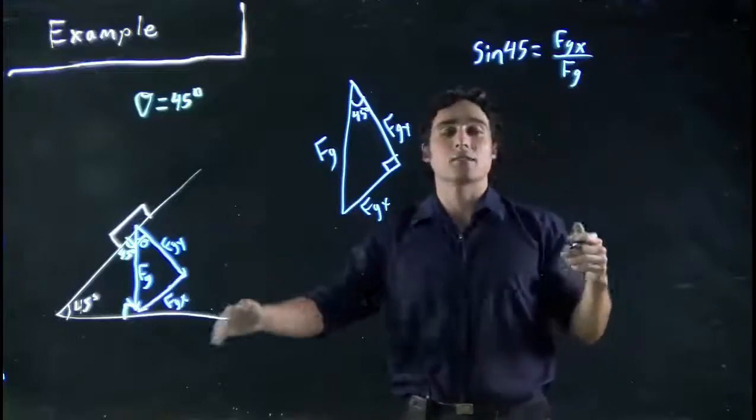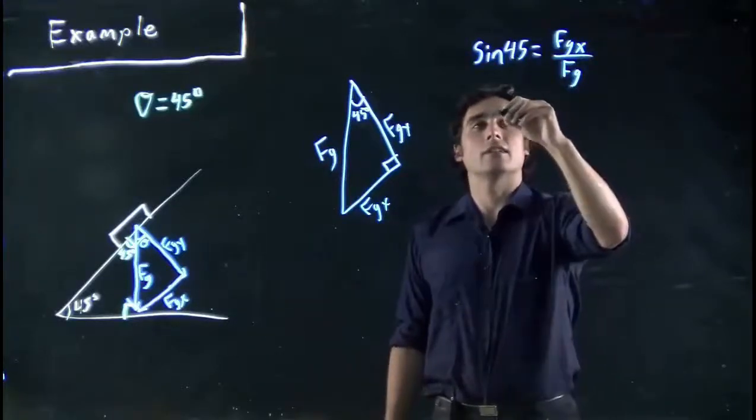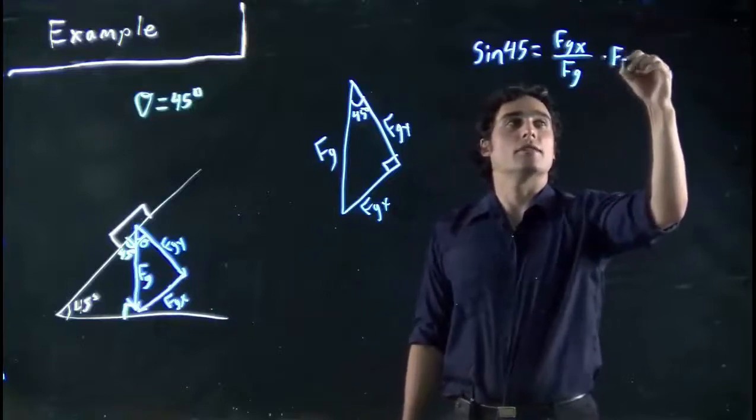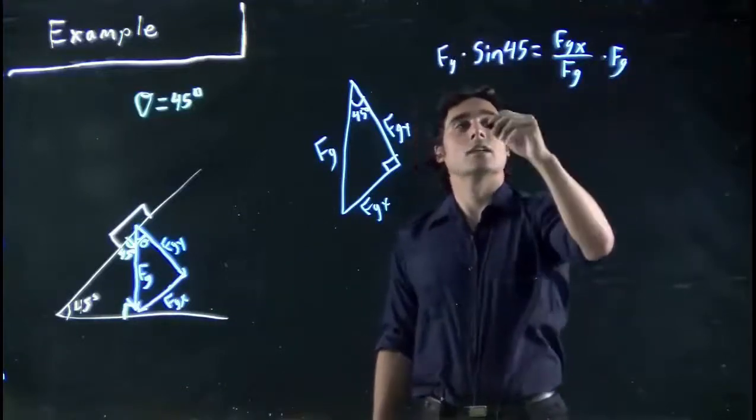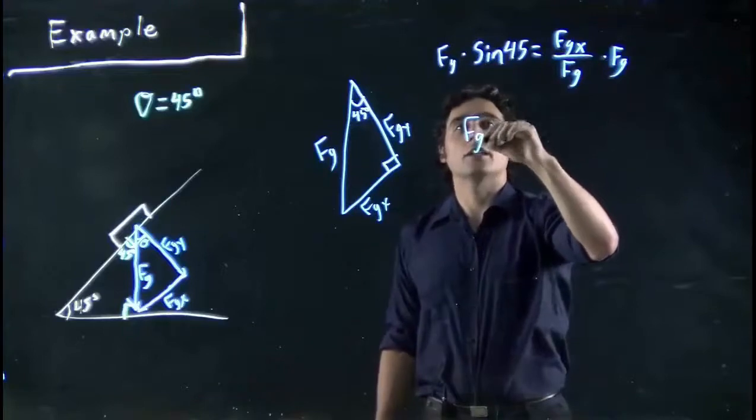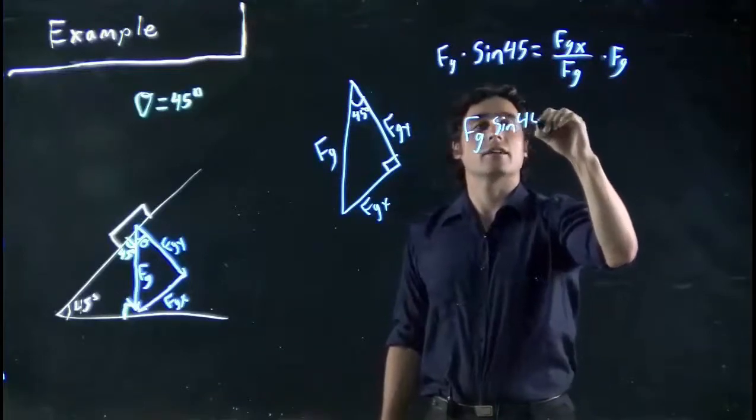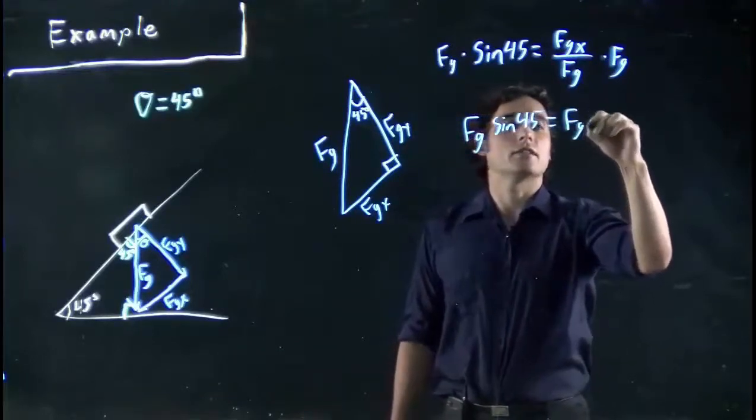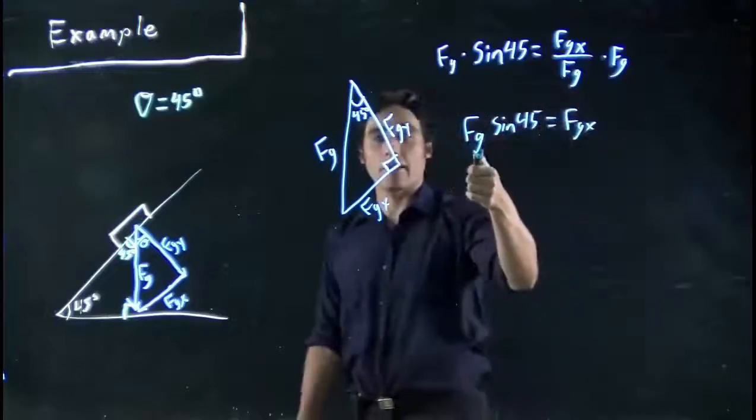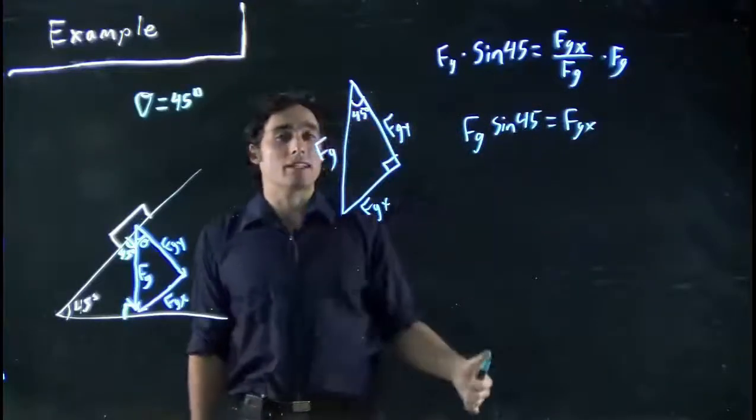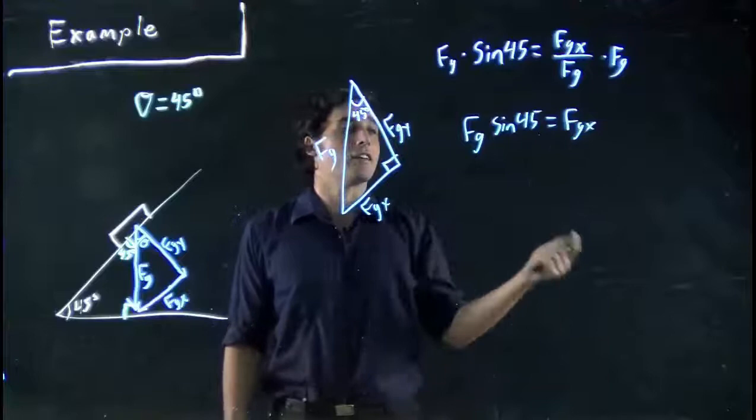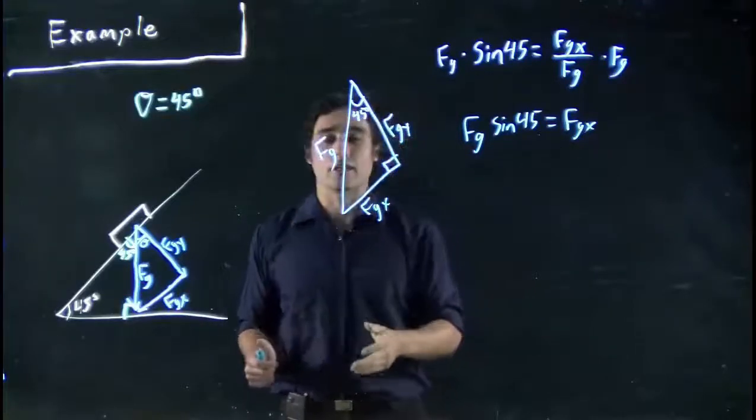So sine of 45 is opposite our Fg,x over hypotenuse Fg. So if we wanted the x component of the force that's actually causing this to move, we would multiply both sides by Fg. So we get Fg sine 45 equals Fg,x. If we knew what Fg was, we just multiply by sine 45 and get our value for the force acting in that direction.